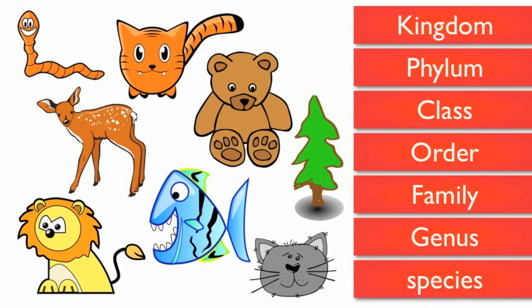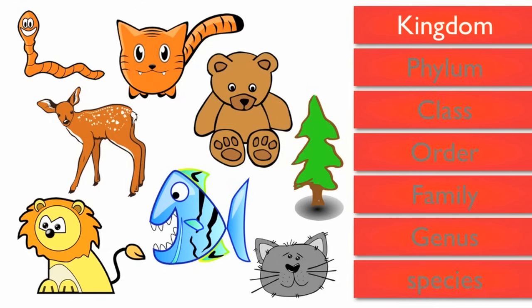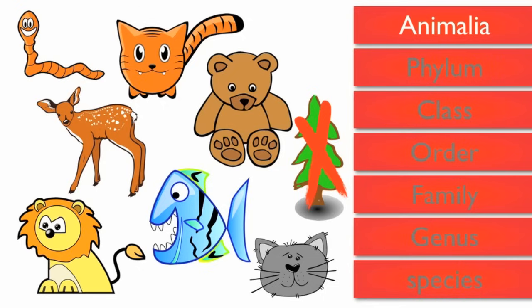A lion belongs to the kingdom Animalia, a group that includes all animals. So in our group of organisms, the tree would not fit into this grouping.